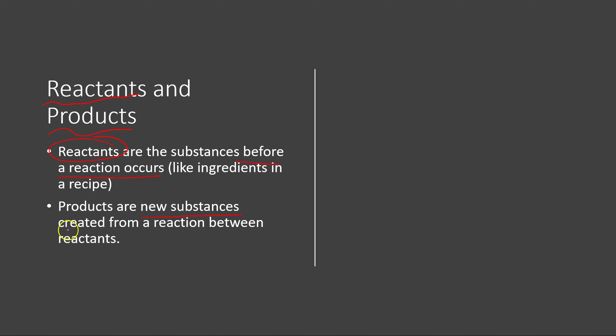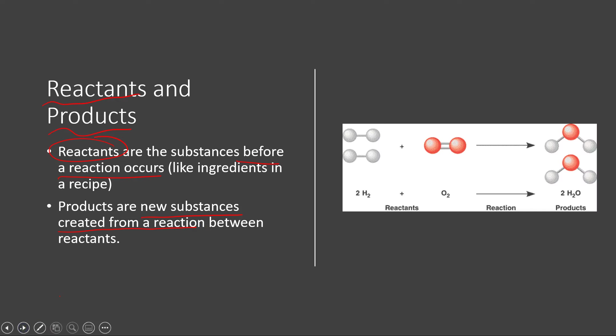The products are new substances created from a reaction. So for example, we can have hydrogen gas and oxygen gas, those would be our reactants in this reaction. And when those do react, they produce water, which would be the product.